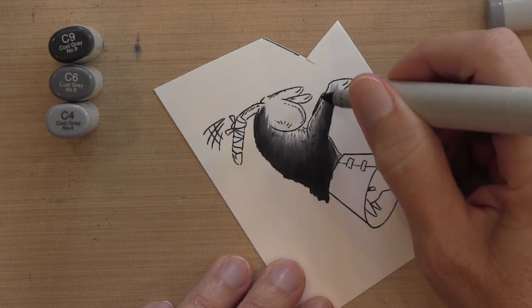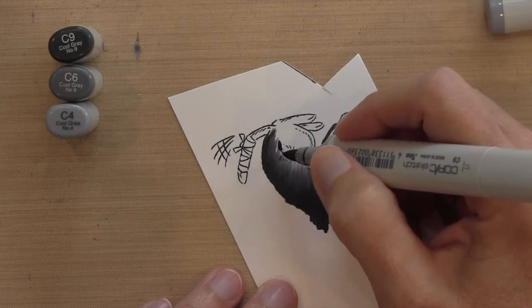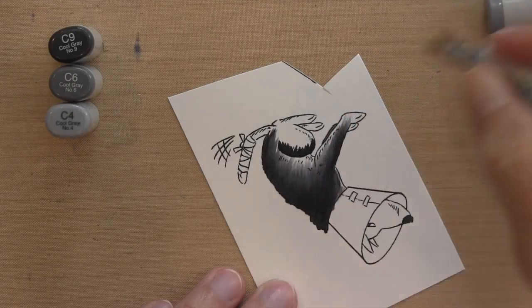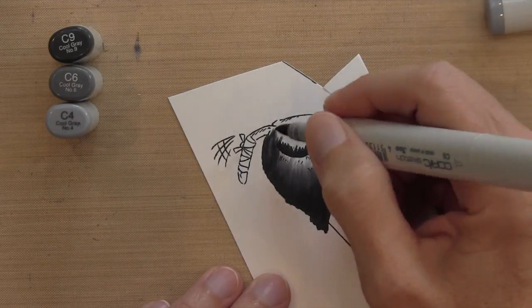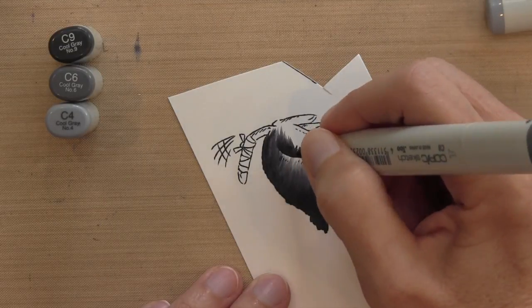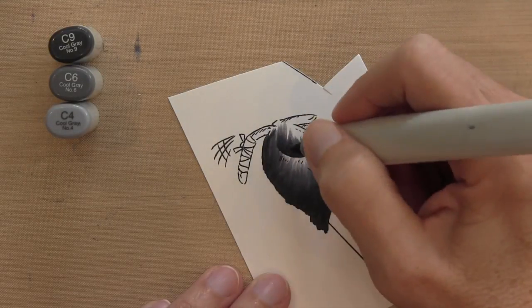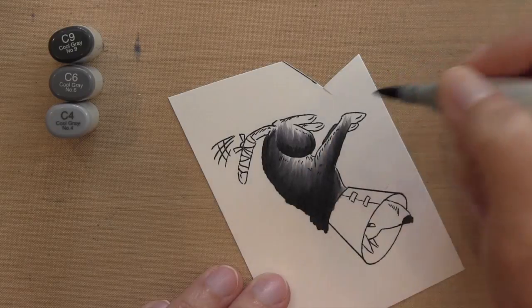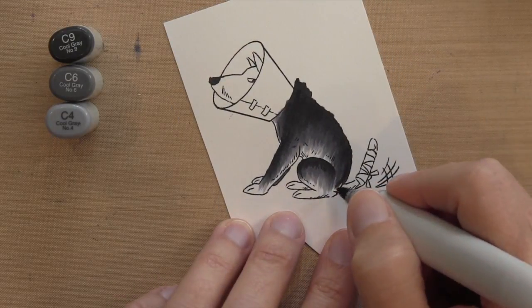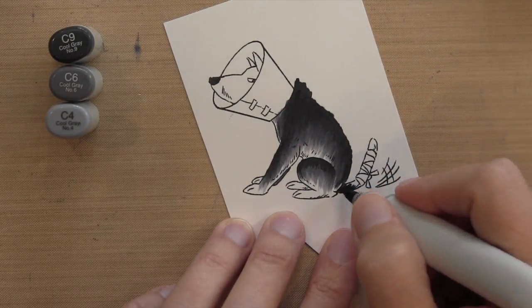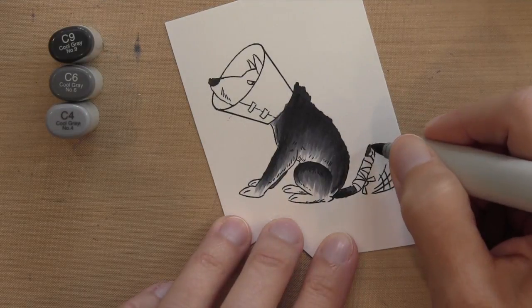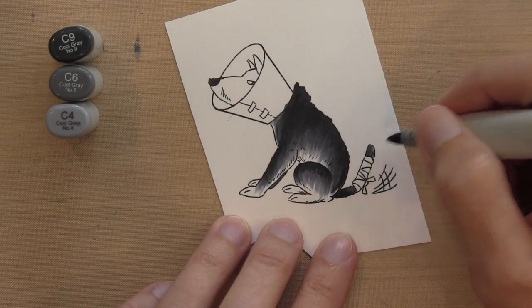And then that leg behind is going to get a little bit of C6. And then his leg is going to start over with the C9. I'm just making shorter strokes and move in with the C6 and then the C4. The tail is a pretty small area, so I'm just going to use the two darker colors, a little bit of C9 and then C6.